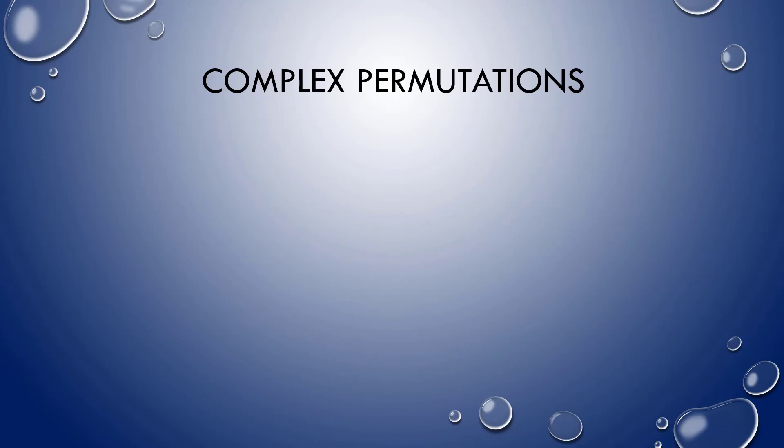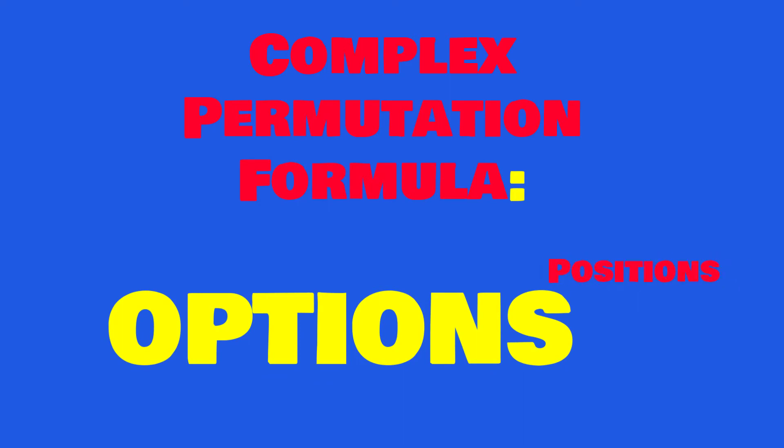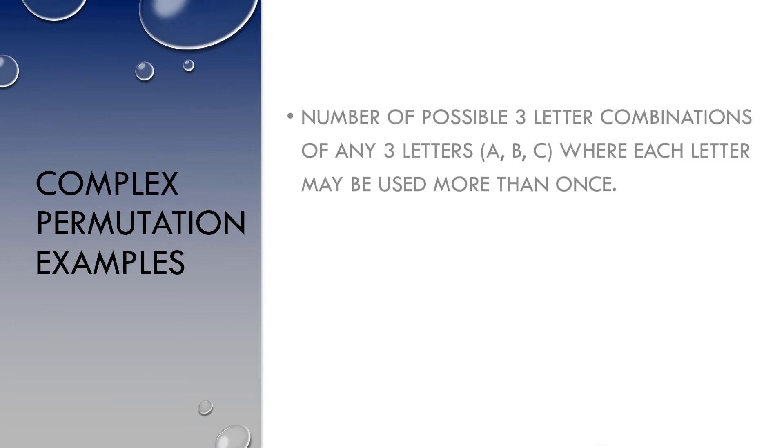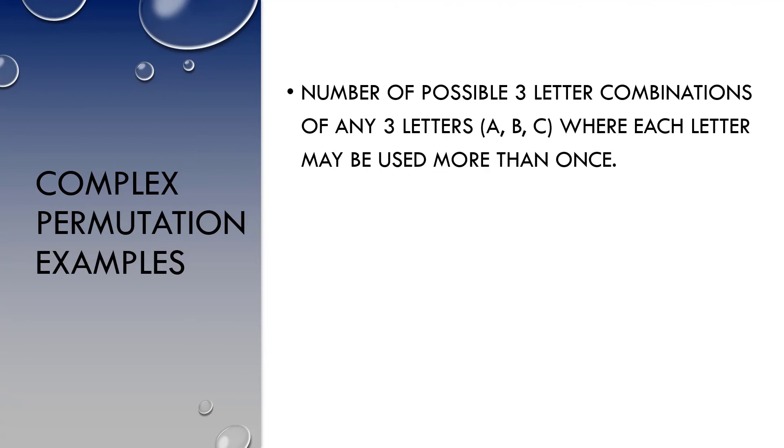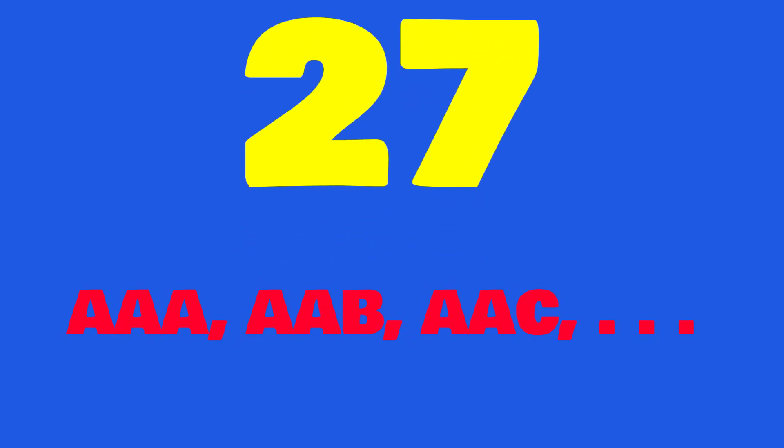But how often do we find alarm codes, pin numbers, passwords, that restrict the number of times you can use a particular letter or number? Almost never. So we're going to need a complex permutation formula for situations where items in a set may be used multiple times. Here, we take the number of options for each position, and we raise it to the power of the number of positions. What's the number of possible three-letter combinations of any three letters A, B, C, where each letter can be used multiple times? We've got three options for each position in the combination. We also have three positions. So instead of six possible combinations, we end up with 27 using the same three letters, because we have 3 cubed, which is 27. Right? AAA, AAB, and on we go until we've got 27 combinations.